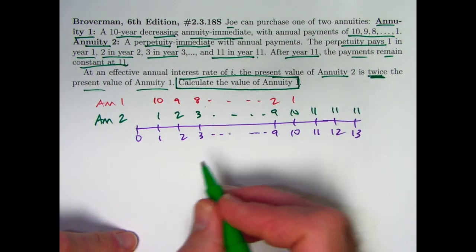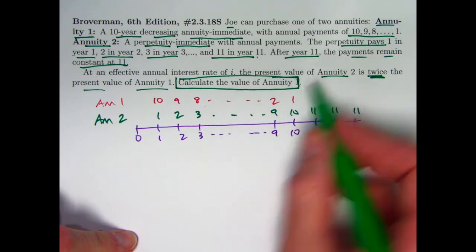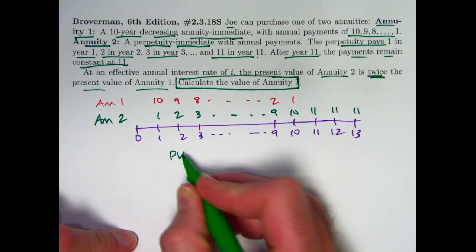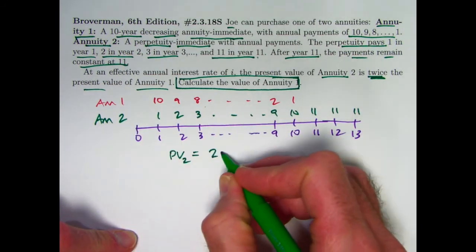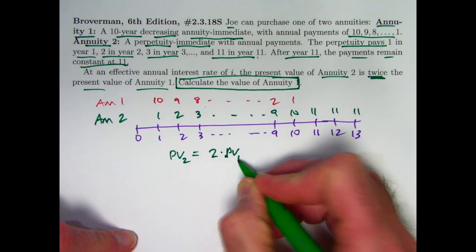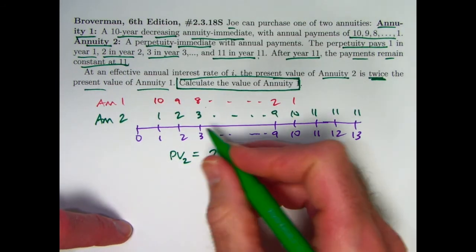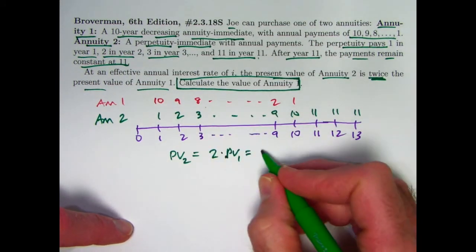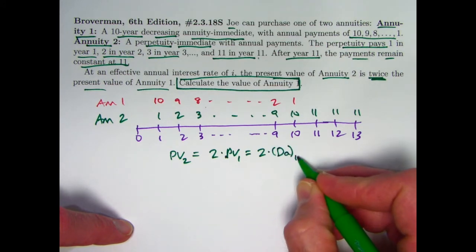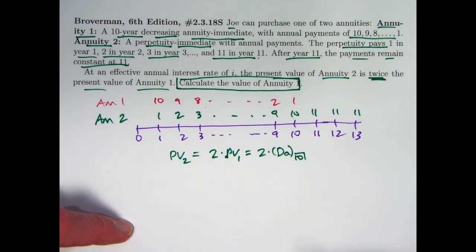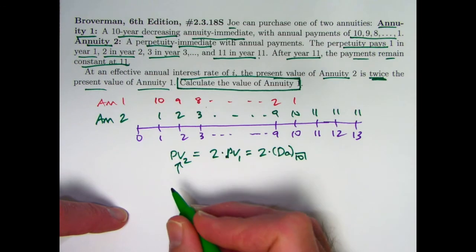All right, the key thing now is the thing that we're given. The present value of annuity 2, let's write it like that, is twice the present value of annuity 1. But annuity 1 is that simple decreasing annuity. Symbolically speaking, its present value is typically written as DA sub n, n is 10 in this case. I won't bother writing the i. What about the present value of annuity 2?